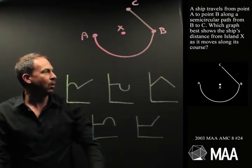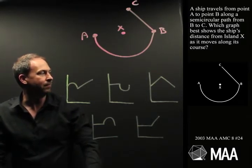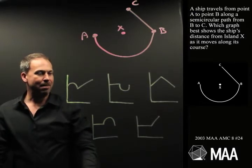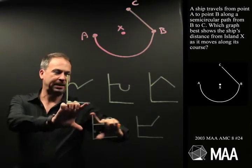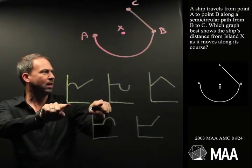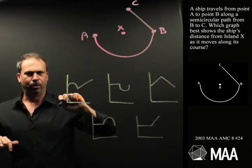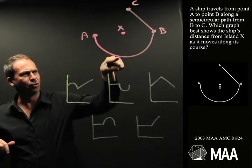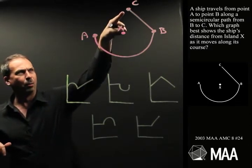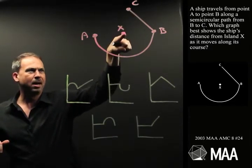Which of these graphs best shows the ship's distance from island X as it moves along its course? So, I'll quickly just resketch the graphs here in the question. This is distance traveled and distance from X. So the question is, as the ship goes along this strange journey, we want to graph its distance from the island X.